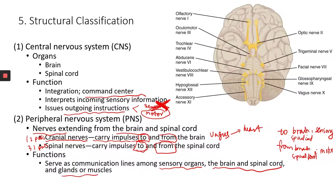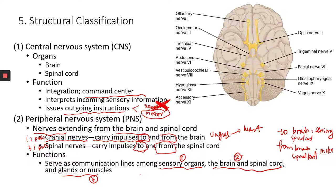This relates back to the first slide of the nervous system — the three components or three functional areas: sensory, integration, and motor output.